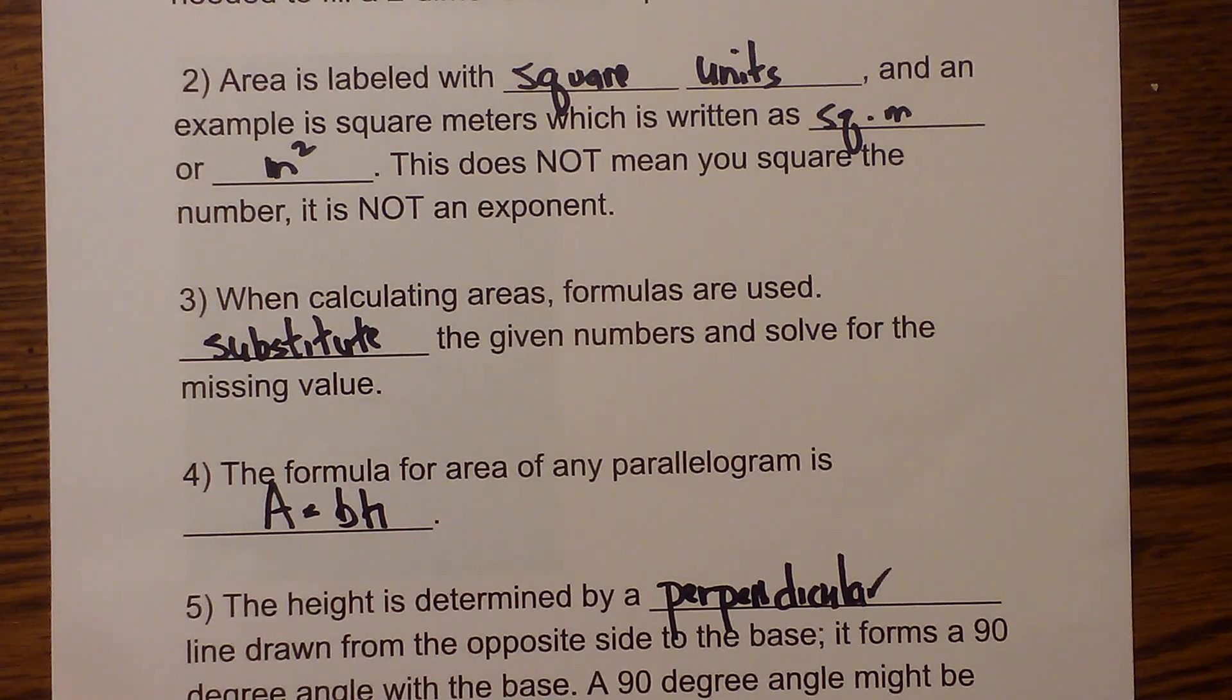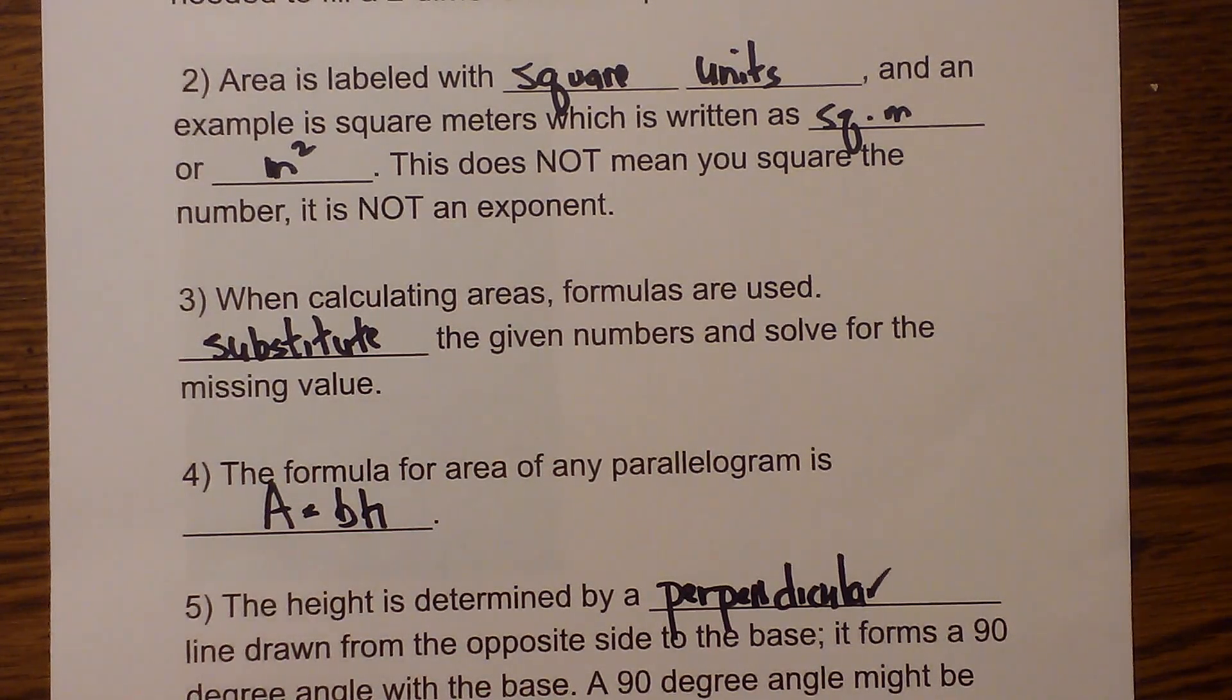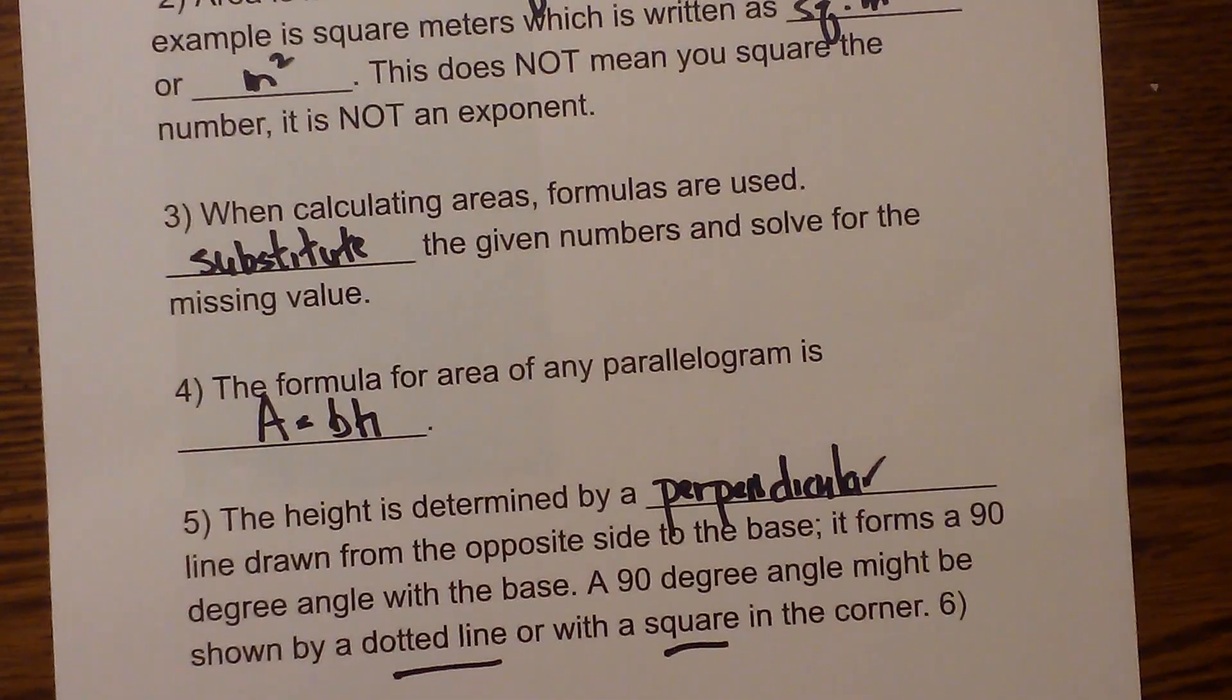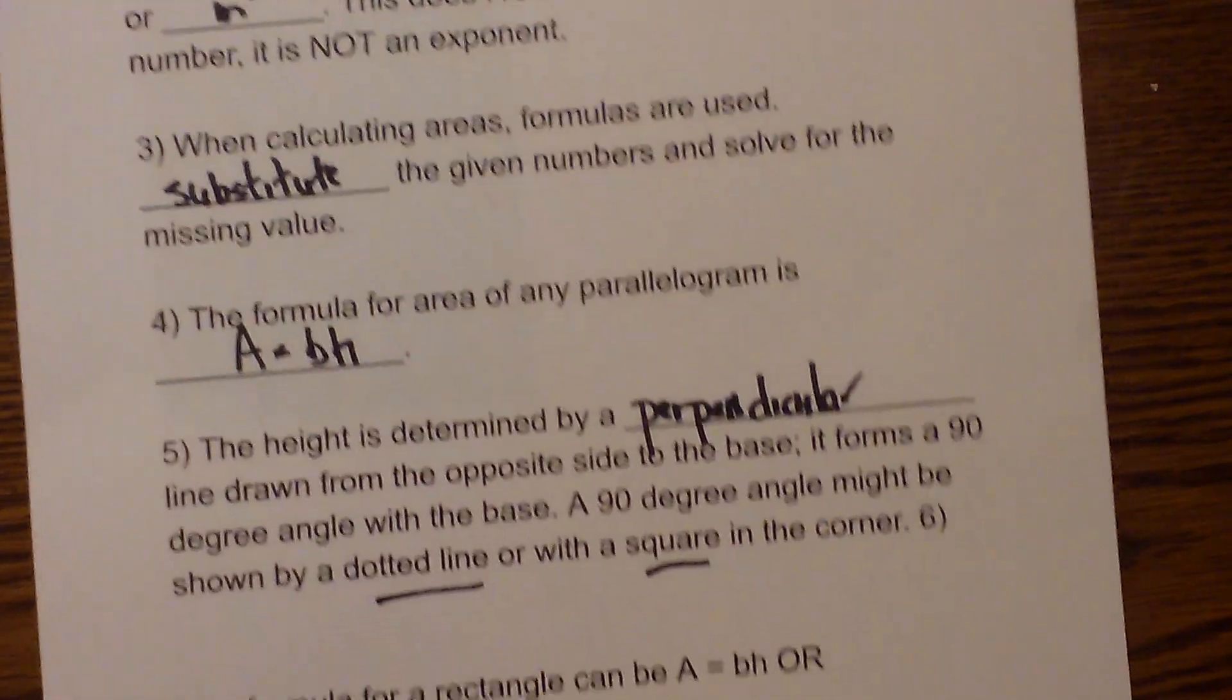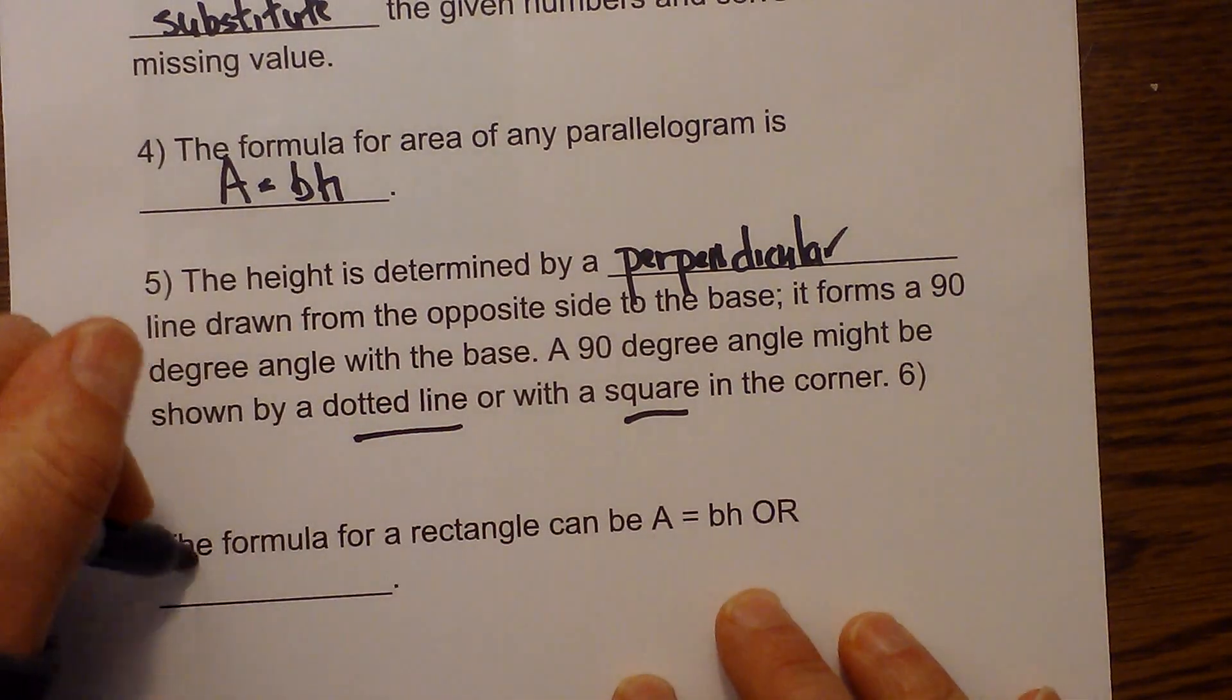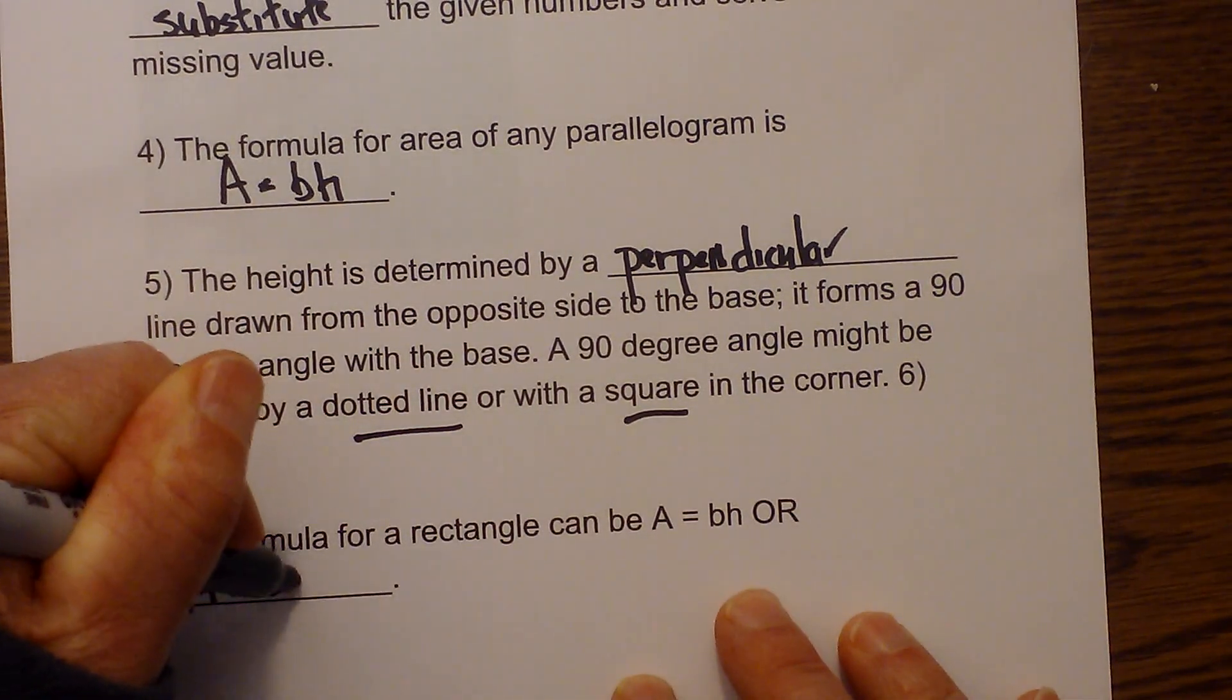A 90 degree angle might be shown with a dotted line or a square in the corner. The formula for a rectangle can be area equals base times height or area equals length times width.